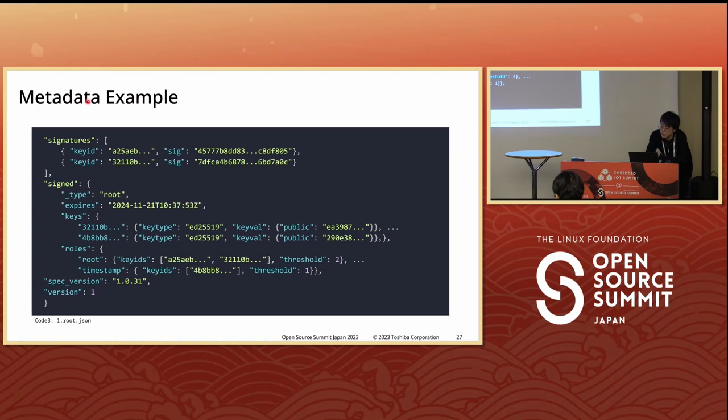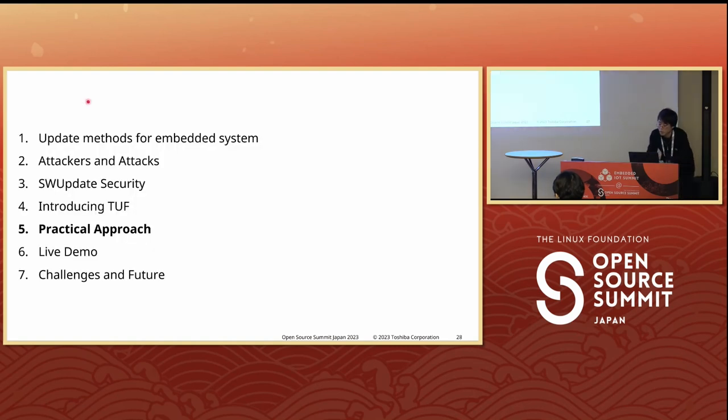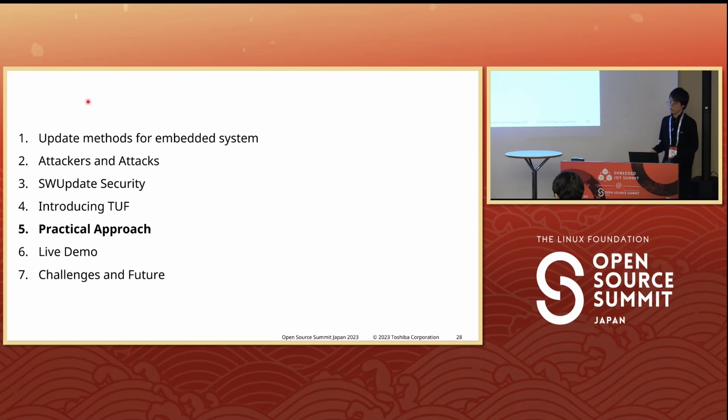Here is a part of the root metadata. It includes the version of this root metadata file — version number one. It also lists the key information for each role. The details are signed using keys displayed in this section — this is the signature section.